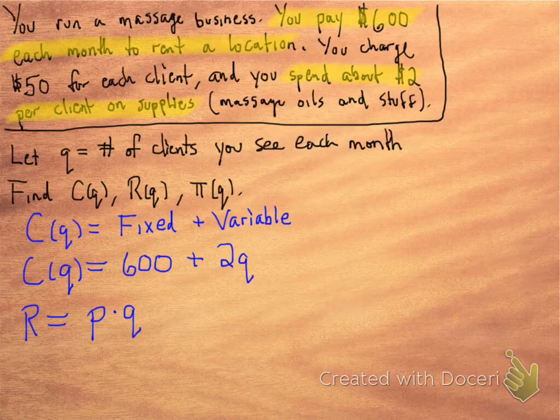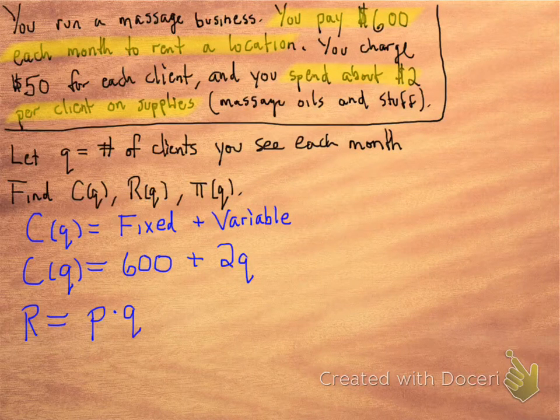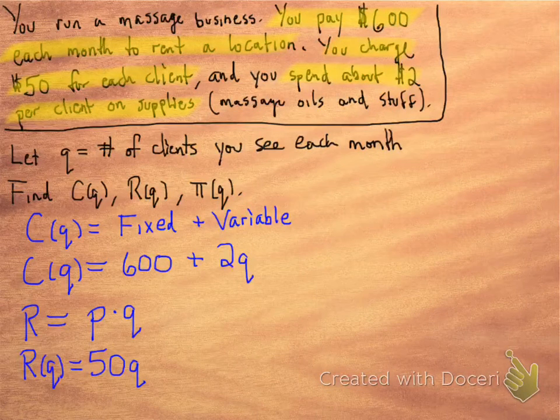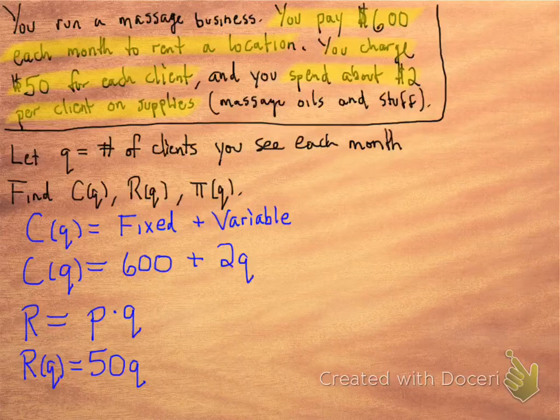Revenue is P times Q. So we need to figure out from this example where we can find P. There it is—you charge $50 for each client, so P is $50. For every client you see, you bring in $50. That's where the 50Q comes in.